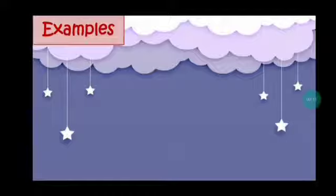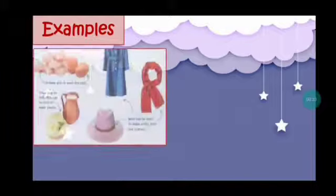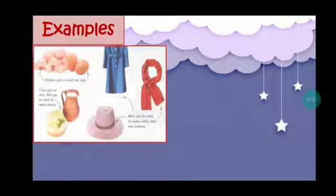Look at the picture here. The chicken gives us meat and eggs, and then the cow gives us milk which can be used to make cheese. These are the examples that we can get food from some animals. And then the next picture: wool can be used to make coat, hat, and scarf. This is the example that we can get some material from the animals, from the wool, dari bulu domba.